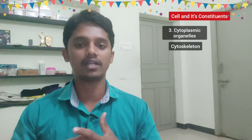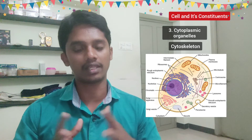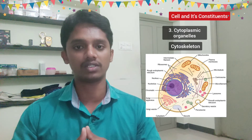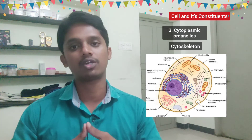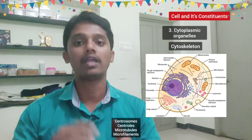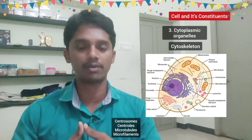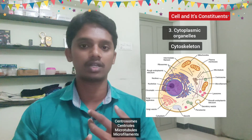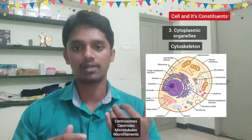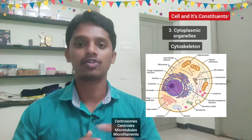The next component is the cytoskeleton. The cytoskeleton has many components, including the centrosome, centriole, microtubules, and microfilaments. The centrosome and centriole are very important for cell division. Overall, the cytoskeleton provides structural support to the cell and plays a key role in cell division.